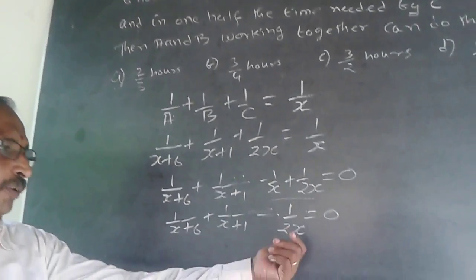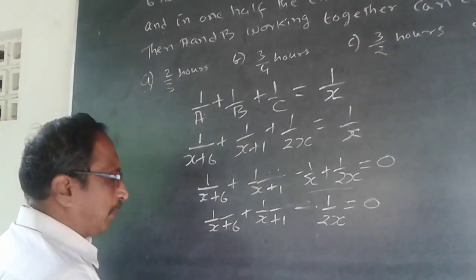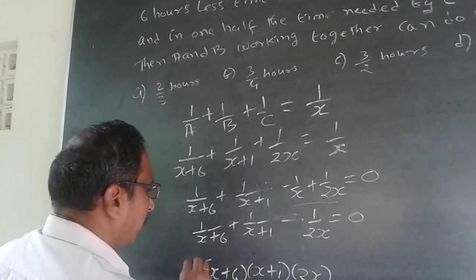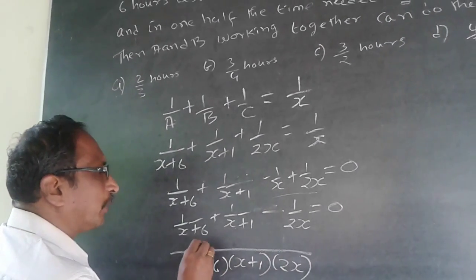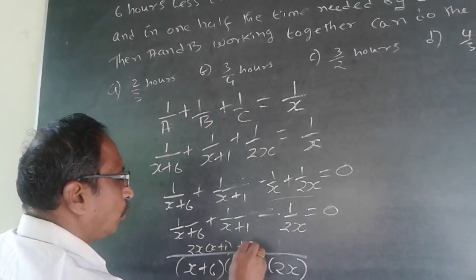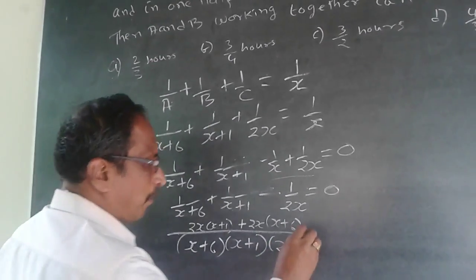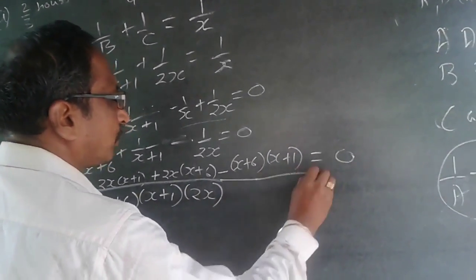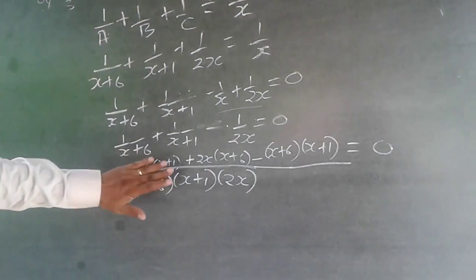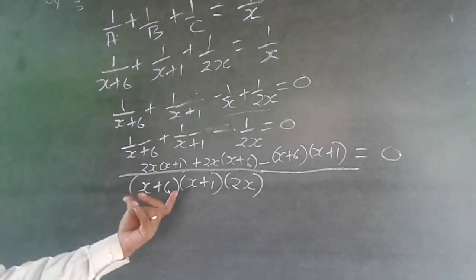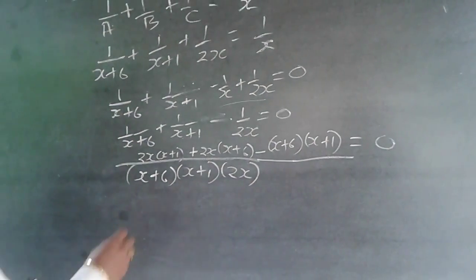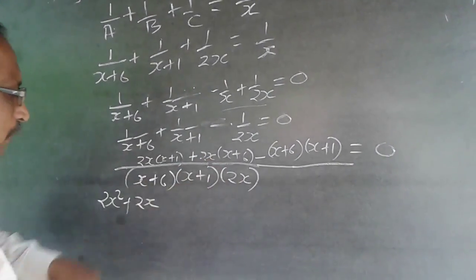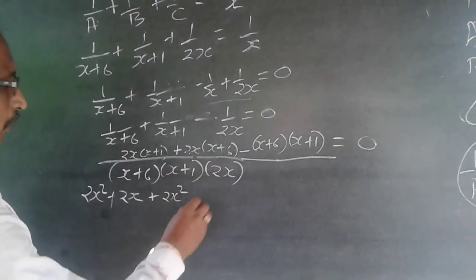Now solve this. The LCM will be (x+6)(x+1)(2x). The numerator becomes: 2x(x+1) + 2x(x+6) minus (x+6)(x+1) = 0. Expanding: 2x² + 2x + 2x² + 12x minus (x² + 7x + 6) = 0.